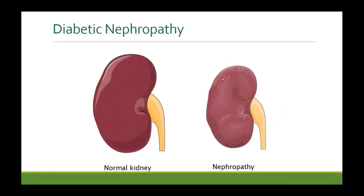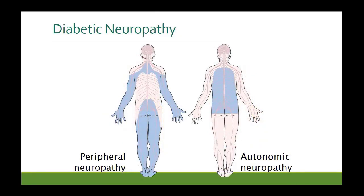Diabetic nephropathy affects the kidneys, leading to gradual loss of kidney function, shrinkage of the kidney, and increased risk of kidney infections or pyelonephritis. Diabetic neuropathy can be autonomic — causing postural hypotension and other autonomic abnormalities — or peripheral, presenting as pins and needles, paresthesias, or numbness over fingers and toes.